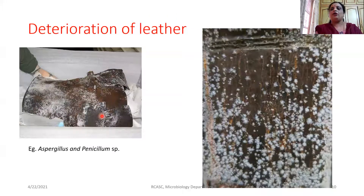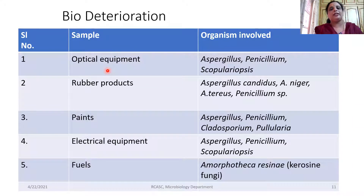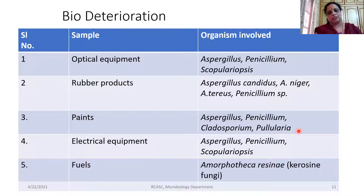We studied the deterioration of leather, which we would have come across in our day-to-day life. We also studied the biodeterioration of optical equipment — especially our microscopes. If cedar wood oil is used and the objective is not cleaned, fungal growth happens — especially Aspergillus and Penicillium — infecting optical equipment and making the lens blur. Rubber products have also been extensively damaged by Aspergillus species. Paints get deteriorated due to wetting of walls, and we would have come across black patches caused by Aspergillus, Penicillium, and Cladosporium species.